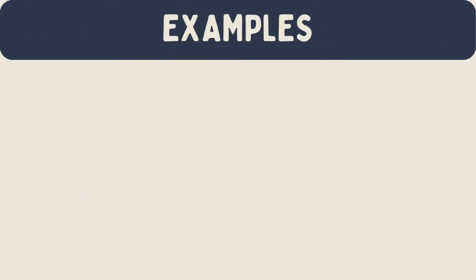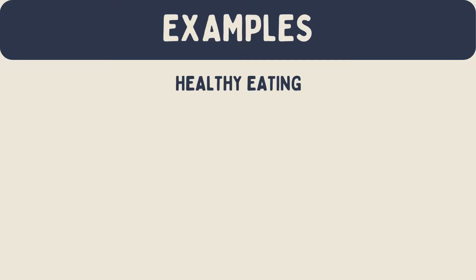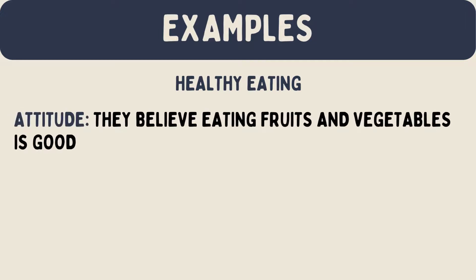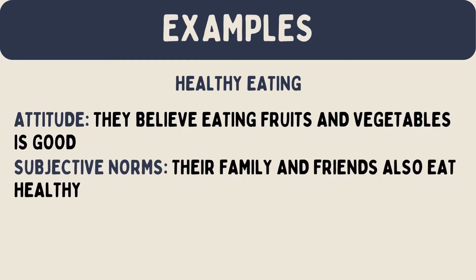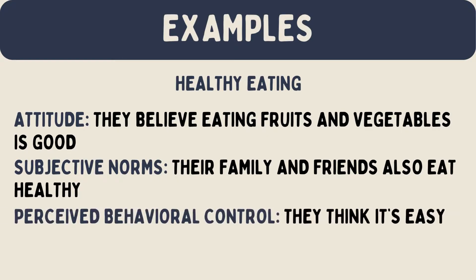For example, consider healthy eating. Imagine someone wants to eat healthier. Their attitude: they believe eating fruits and vegetables is good for their health. Subjective norms: their family and friends also eat healthy and encourage them. Perceived Behavioral Control: they think it's easy to buy and prepare healthy food. If all these factors are positive, the person will likely intend to eat healthier and actually do it.